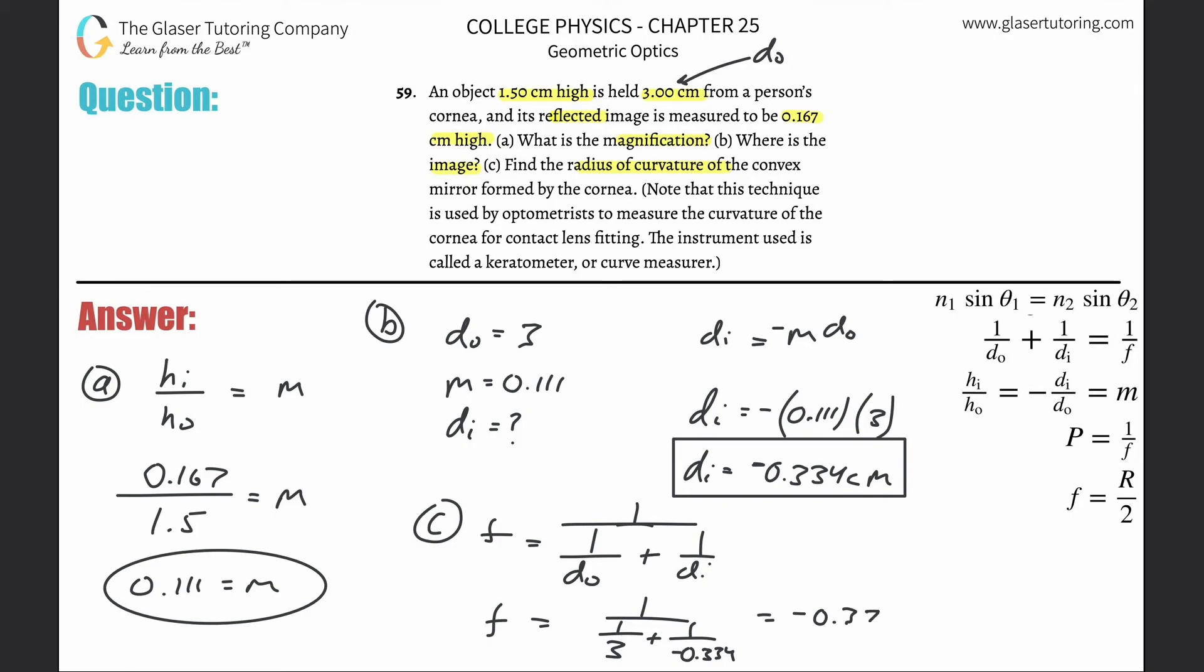It's not the final answer though - we need the radius of curvature. We have the formula that the focal length equals the radius of curvature divided by two. To find the radius of curvature, just cross multiply the two over, and it's simply two multiplied by that focal length of negative 0.376. Multiply that by two, and we come up with a value of about negative 0.75 - that's the radius of curvature.